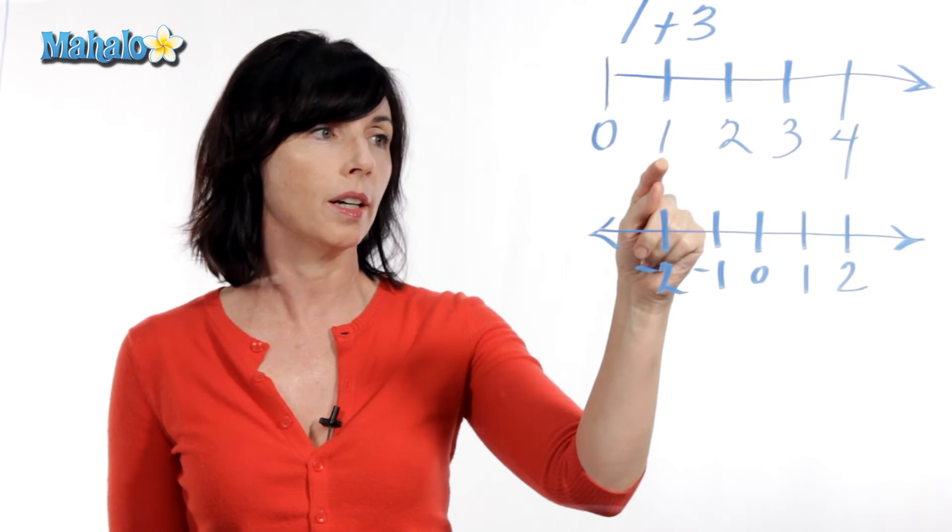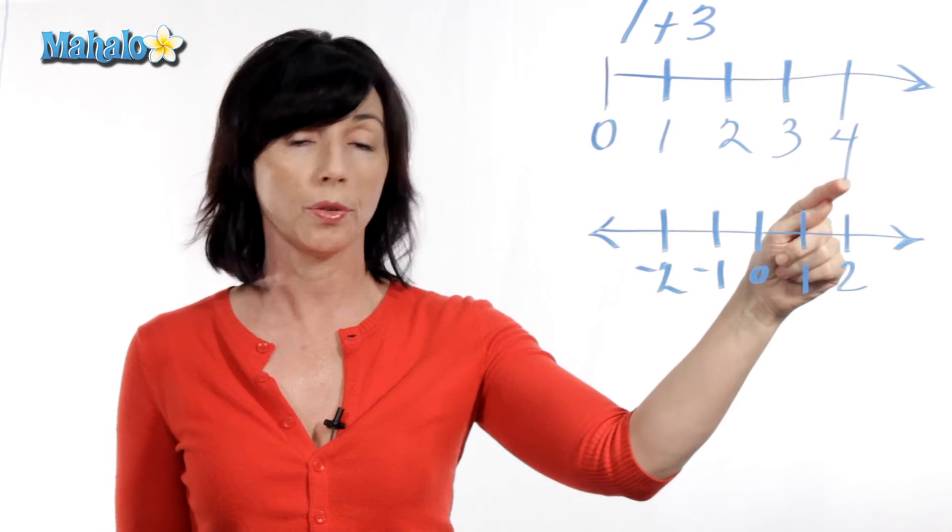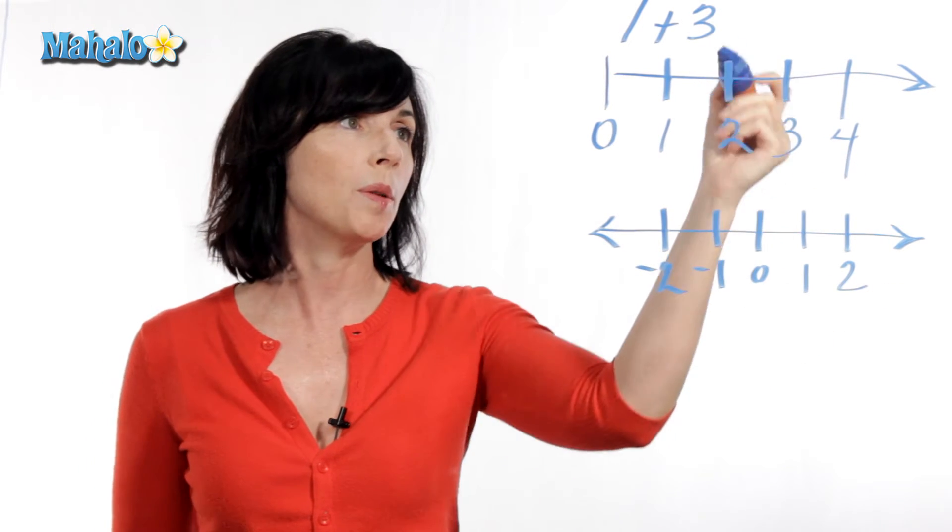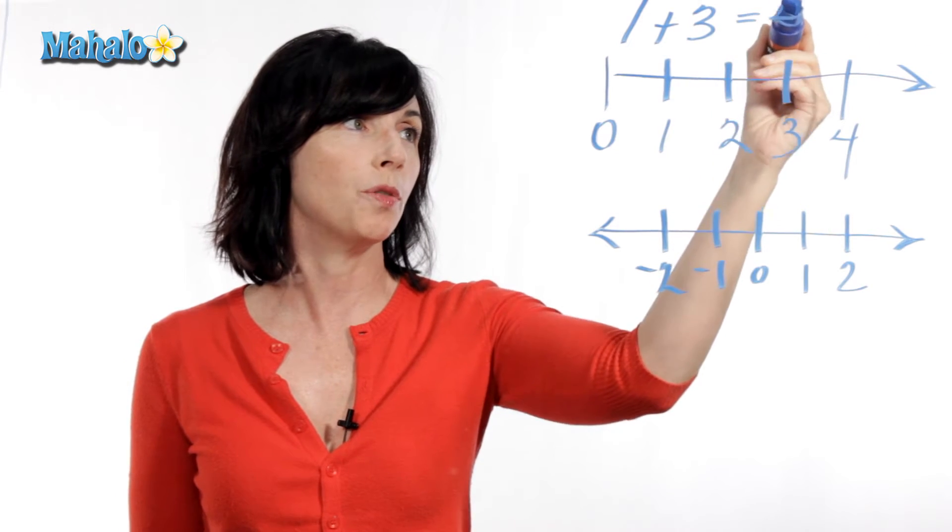So if we start here and we move one, two, three units to the right, that gets us to four. So one plus three is equal to four.